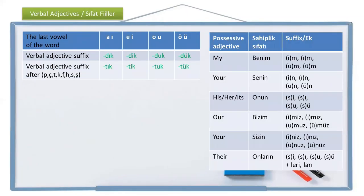Alright, now let's see another suffix for verbal adjectives. This verbal adjective suffix alternates according to four-way vowel harmony as -dık, -dik, -duk, or -dük. And also because of consonant alternation, it can be -tık, -tik, -tuk, or -tük. While writing these verbal adjectives, we are going to need possessive adjective suffixes, which you can see on the right.